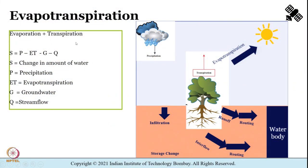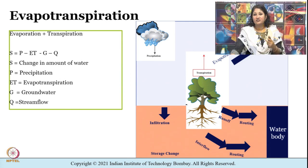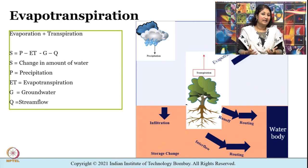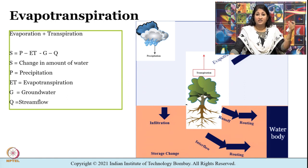Evapotranspiration is a combination of evaporation and transpiration — a general terminology for the phase conversion of liquid water into gas. Transpiration is the transfer of liquid water from plants to the atmosphere as vapor. ET is hard to measure directly as it varies drastically across smaller scales because it depends on the species of plants, their age, their health, the sun angle, the temperature, humidity, wind, and land cover.